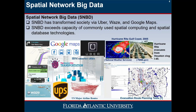Spatial Network Big Data has the potential to transform our society via next-generation location-based services. Examples include temporally detailed roadmaps that provide speed every minute for every road segment, GPS trace data from cell phones, and engine measurements of fuel consumption and greenhouse gas emissions. However, Spatial Network Big Data poses a significant challenge as the size, variety, and update rate of mobile datasets exceed the capacity of commonly used spatial computing and spatial database technology to manage and process data with reasonable effort.